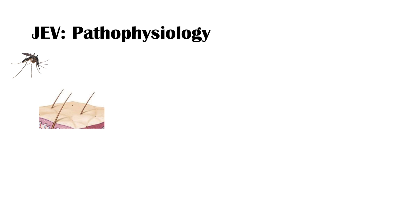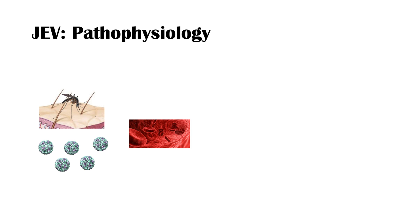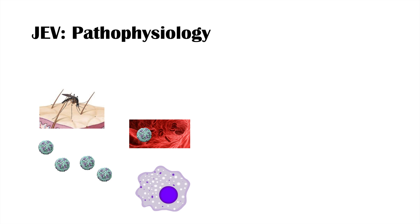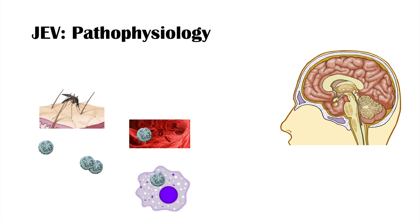A Culex mosquito intended to bite a pig or heron ends up landing on a human and takes a blood meal. The virus leaves the mosquito's saliva and enters the person, causing viremia — virus in the blood. The virus can also enter macrophages. In some cases, the virus can cross the blood-brain barrier and enter the brain, causing infection there.